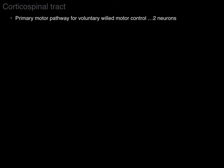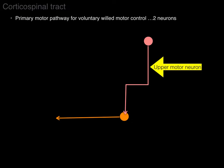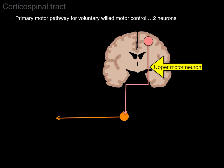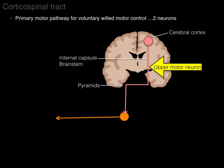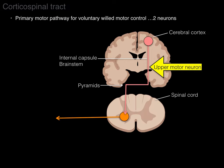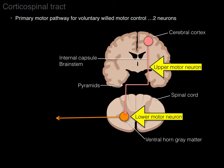The corticospinal tract is the primary motor pathway for voluntary willed motor control and it consists of two neurons. The first one is called the upper motor neuron because it arises way up high in the central nervous system in the cerebral cortex. Its axon descends through the internal capsule and brainstem and at the level of the pyramids decussates to the contralateral side, continues down and synapses in the spinal cord with a lower motor neuron, with the cell body housed in the ventral horn gray matter.